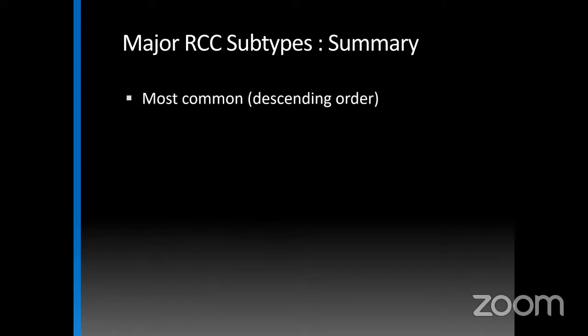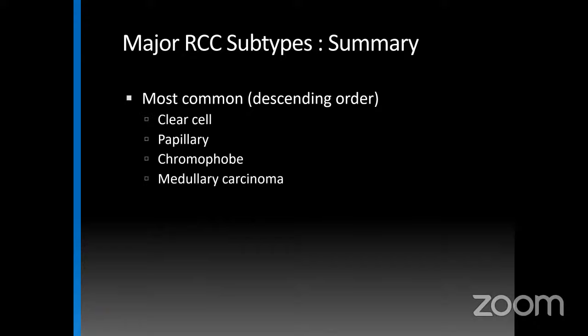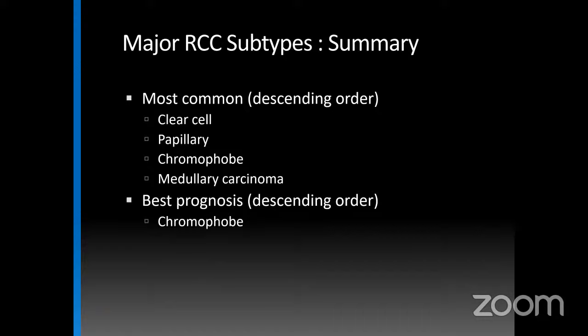To summarize the major renal cell subtypes in descending order of frequency: clear cell, papillary, chromophobe, and medullary carcinoma — medullary tends to occur only in patients with sickle cell trait. In descending order of best prognosis: chromophobe, papillary, clear cell, then medullary with the worst.